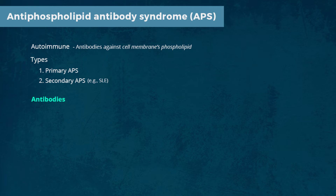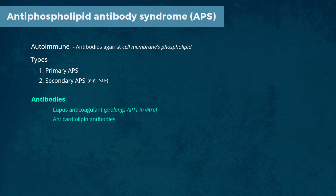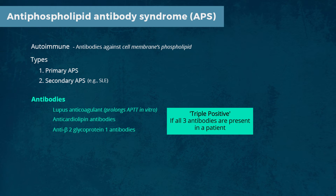Which antibodies are found in antiphospholipid antibody syndrome? The antibodies found in this disease are lupus anticoagulant, anticardiolipin antibodies, and anti-beta-2-glycoprotein-1 antibodies. If all three antibodies are present, the patient is said to be triple positive, and such patients have more severe disease.